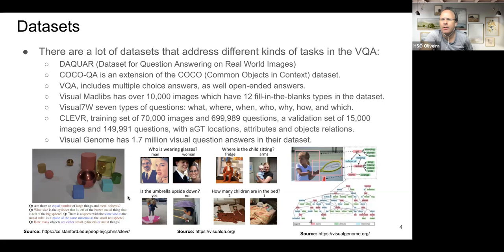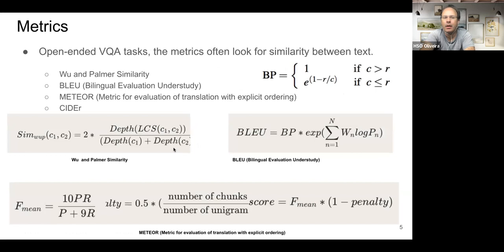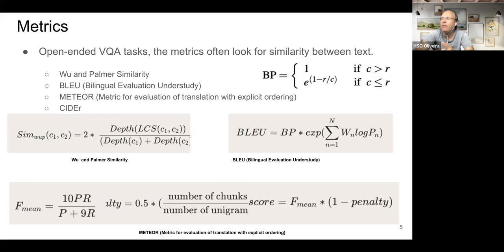CLEVR from Stanford tries to establish relations among objects — for example, 'equal number of large strings in metal spheres' — which is not a trivial task for models. Regarding metrics, VQA and Palmer basically use fuzzy logic to calculate similarity between two sentences. It can be done as a directed acyclic graph, but has drawbacks: it works for single short word answers and is not very robust to complete sentences.